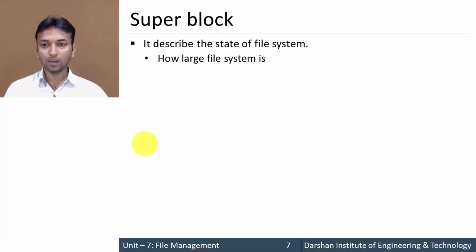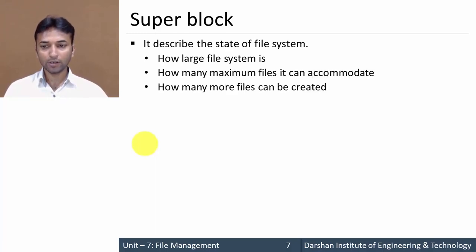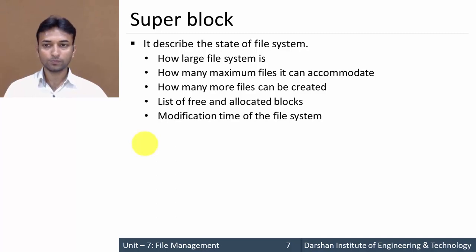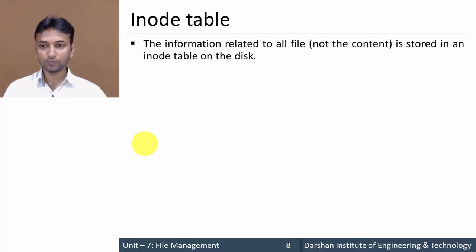The second category is the super block. It simply describes the state of the file system — how large the file system is, how many maximum files it can accommodate, how many more files can be created, the list of free and allocated blocks, and the modification time of the file system.